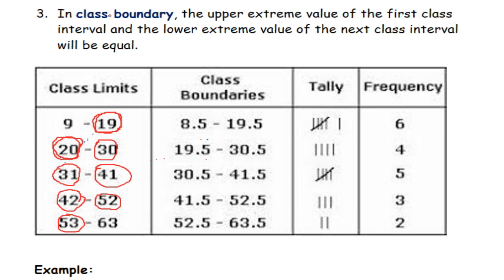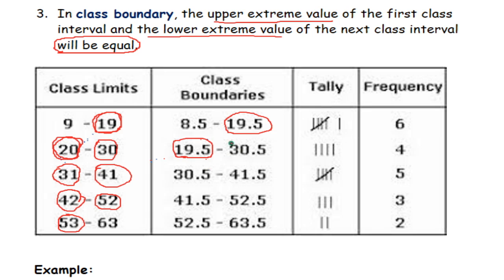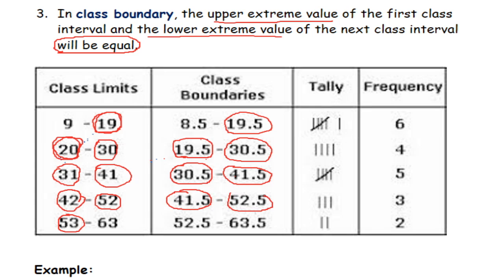That's not the case for class boundaries. In class boundaries, the upper extreme value of the first class interval and the lower extreme value of the next interval will be equal. The value that ends this class interval is 19.5 and the value that begins the next is also 19.5. Similarly, 30.5 ends one interval and begins the next, 41.5 ends and begins, and 52.5 ends this class interval and the same 52.5 begins the next. Unlike class limits, the value that ends a class interval is the same value that begins the next.